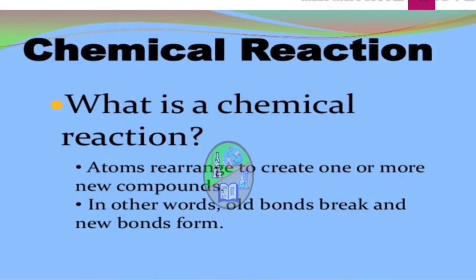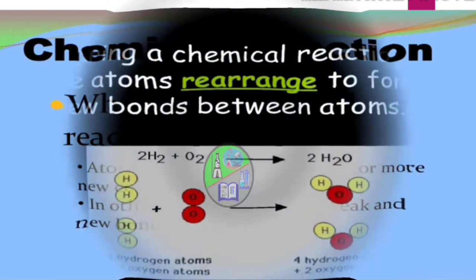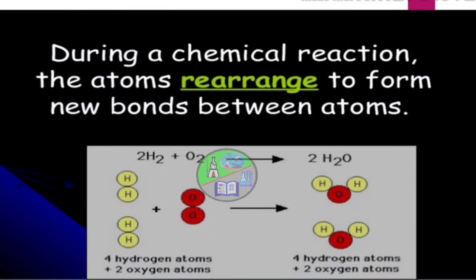So, atoms in a chemical reaction either rearrange to create one or more new compounds. Or in other words, we can say that the old bonds break and the new bonds form. As in the previous slide, we read that atoms rearrange themselves. So, let's relate this with an example.